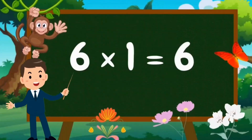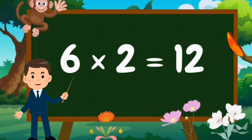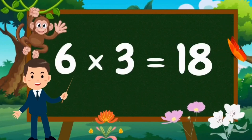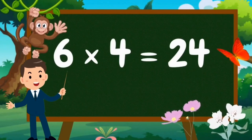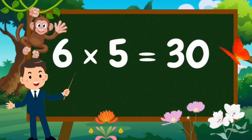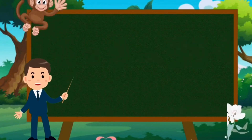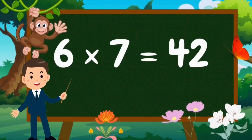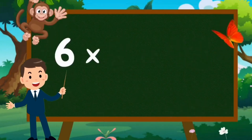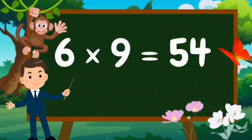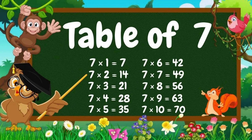Table of Six. Six ones are six. Six twos are twelve. Six threes are eighteen. Six fours are twenty-four. Six fives are thirty. Six sixes are thirty-six. Six sevens are forty-two. Six eights are forty-eight. Six nines are fifty-four. Six tens are sixty.